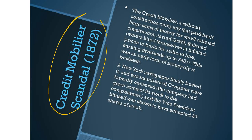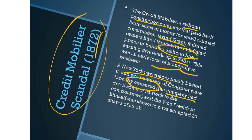The Crédit Mobilier scandal happened during the Grant administration in 1872. The Crédit Mobilier was a railroad construction company that paid itself huge sums of money for small railroad construction, tarring the Grant administration. The railroad owners hired themselves at inflated prices to build the railroad line, earning dividends up to 348%. A New York newspaper busted the scandal, and two members of Congress were formally censured — meaning their votes were taken away — because the company had given them stock. The Vice President himself was shown to have accepted twenty shares of stock as a bribe.